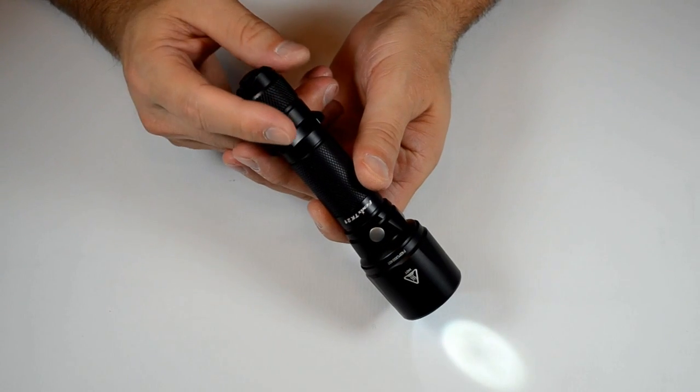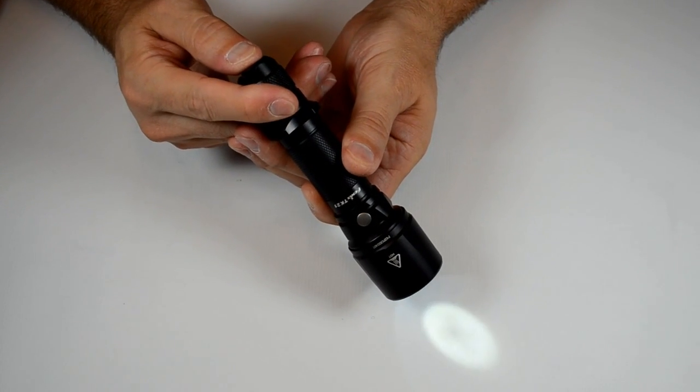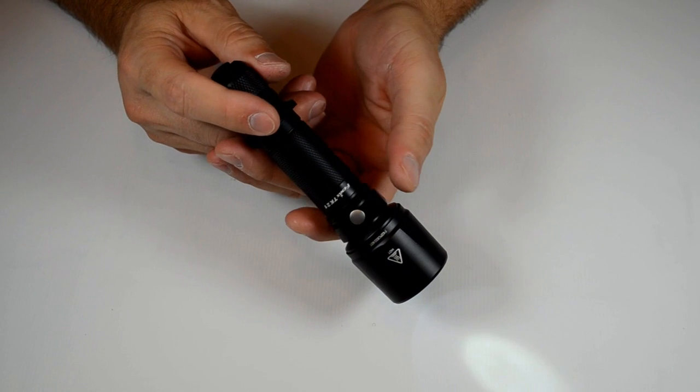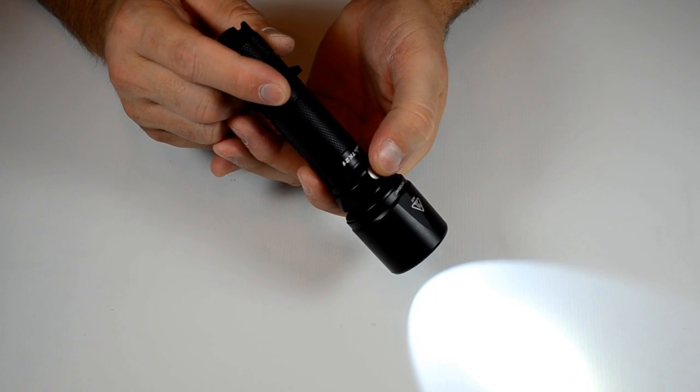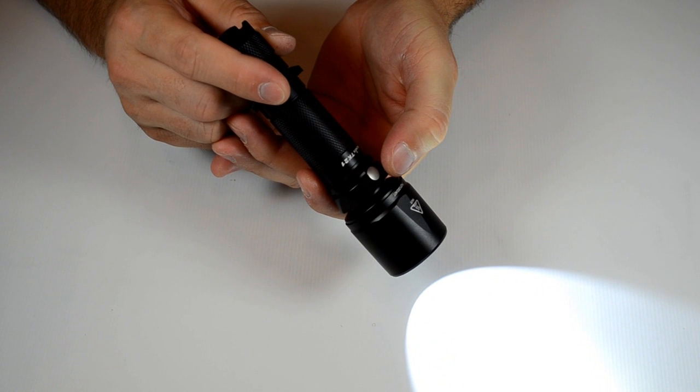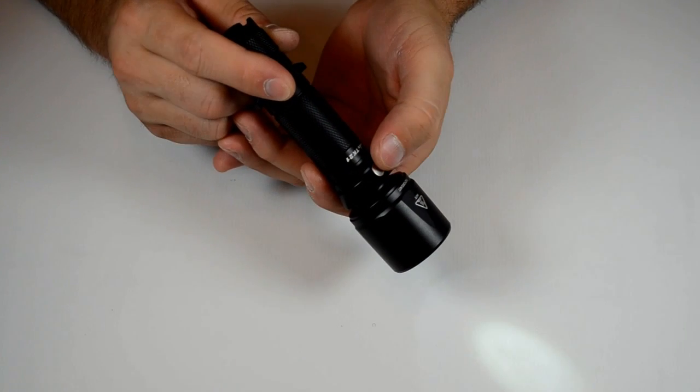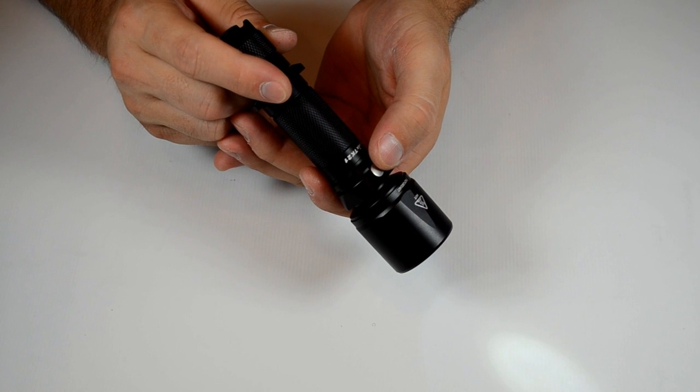You turn it on with the forward clicky, and as I said it's a momentary. You turn it on and then you operate your output by going through the output levels with the side button: low, medium, high, and turbo.